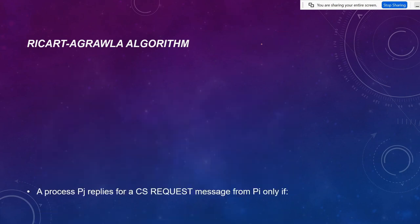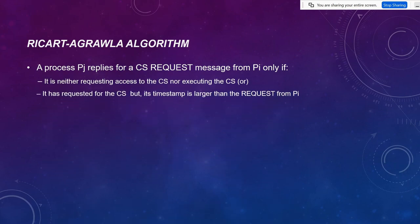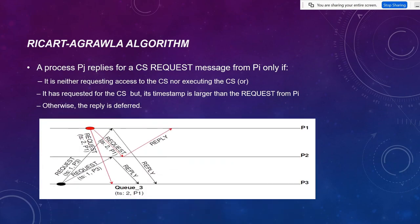In the next slide we see how replies come back. This is a three-process example. The first case says: if a process is neither requesting access to the critical section nor executing the critical section — meaning P2 doesn't want the critical section — then P2 immediately replies back. So the first case is when no process wants the critical section, they immediately reply back.